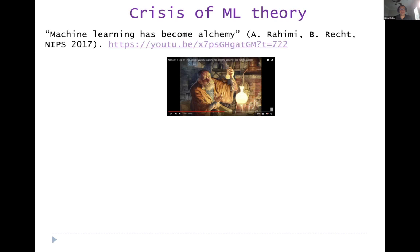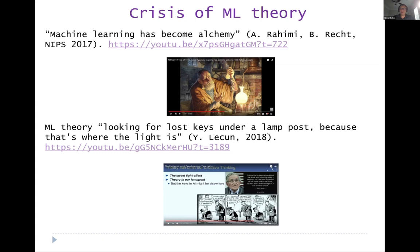On the other hand, machine learning theory is like looking for lost keys under a lamppost, because that's where the light is. There's this cartoon of a person who lost their keys and is looking under a lamppost because it's accessible through the light, but not really where the keys are. Hopefully we can move the light to shine in a different direction. That was the criticism — that theory was irrelevant to the practice of machine learning.